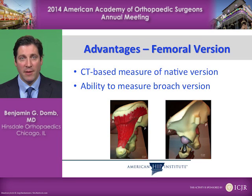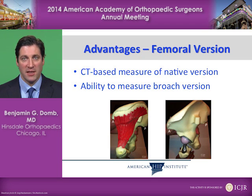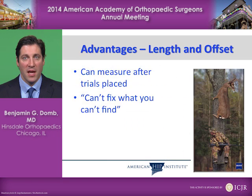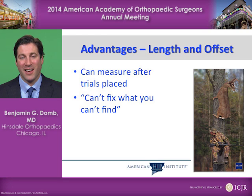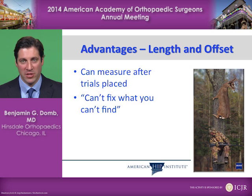With regard to the femoral version, we have CT-based measurement of native version and the ability to measure the broach version — things we never had prior to robotics, and this is a very valuable data point to have. With regard to length and offset, if we can't see it, we can't appreciate how to fix it. You can't fix what you can't find, and this allows us to have very precise feedback as to the length and offset.